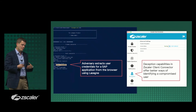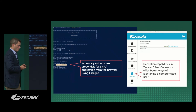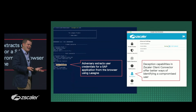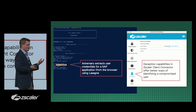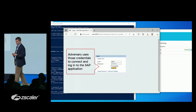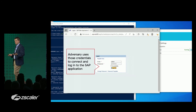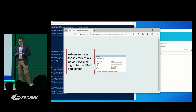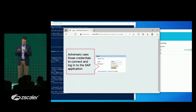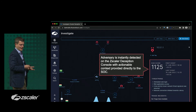Lures and honey tokens are provided on endpoints to understand compromise scenarios. An open-source threat tool effectively looks for stale access tokens to see what a user has access to in order to move laterally. In this scenario, a leftover cookie with access credentials to a private SAP instance is used. In reality, this is not a real cookie or a real application — it is an SAP instance hosted on Zscaler's decoy cloud. When the attacker visits the application to see what they have access to, the SOC team sees what is happening behind the scenes.